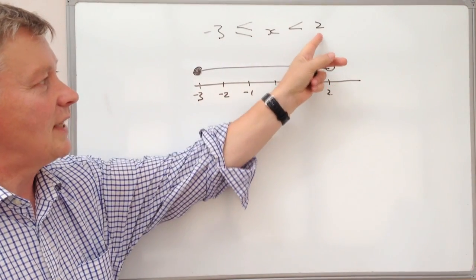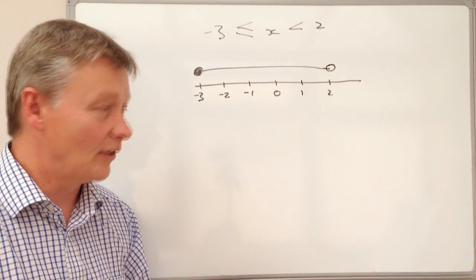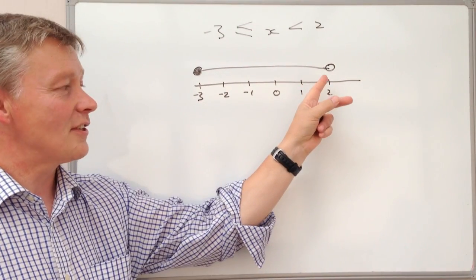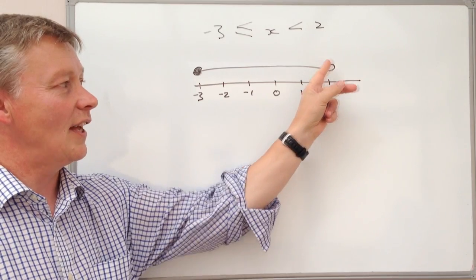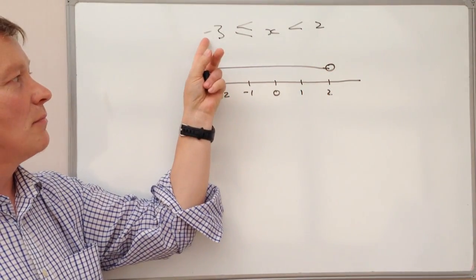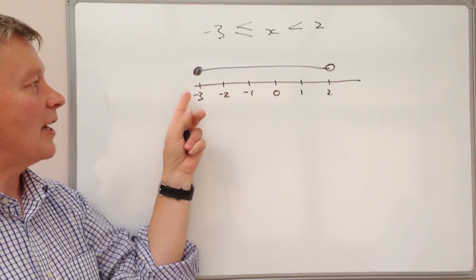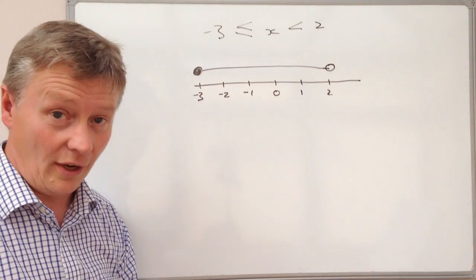If it's open, it doesn't include it. So x is less than 2. In other words, it's not 2, it's less than 2. Now if it's not 2 and less than 2, then we leave it as open. In this particular case, -3 is equal to x. So the value of x could be -3, so we leave that as closed.